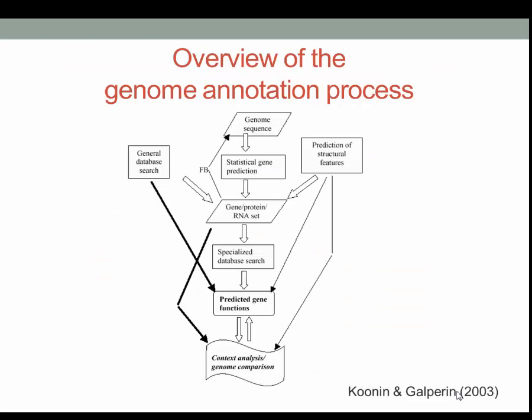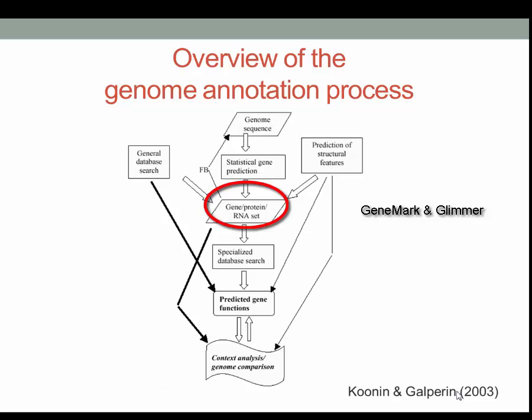After a genome is sequenced, the data are run through a variety of automated programs that predict the function of open reading frames. This flow chart outlines the process of annotating a genome sequence. First, statistical gene predictions are made. Bioinformatics tools such as GeneMark or Glimmer are used to predict protein-coding genes in the sequence.